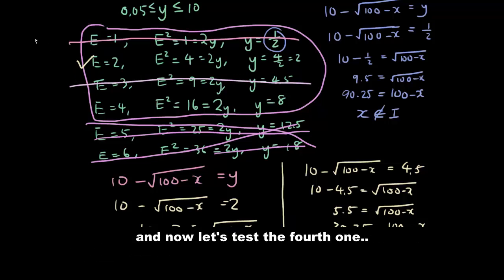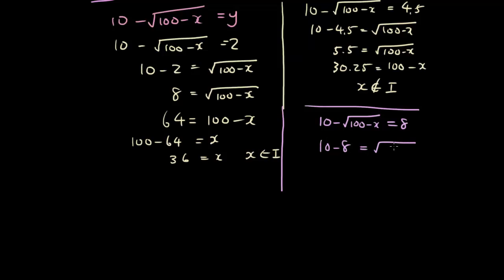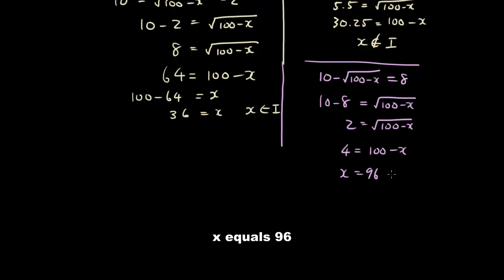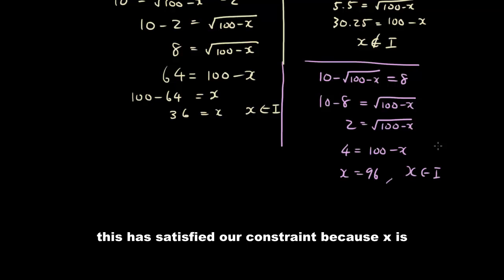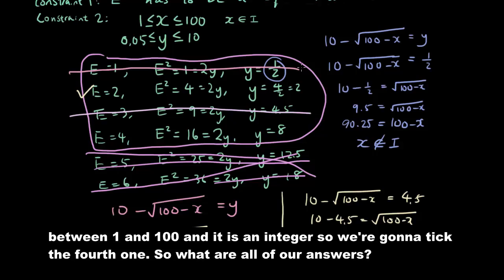Let's test the fourth option, y = 8: 10 − √(100 − x) = 8, so 10 − 8 = √(100 − x), giving 2 = √(100 − x). Squaring: 4 = 100 − x, so x = 96. This satisfies our constraint because x = 96 is an integer between 1 and 100. We tick the fourth one.